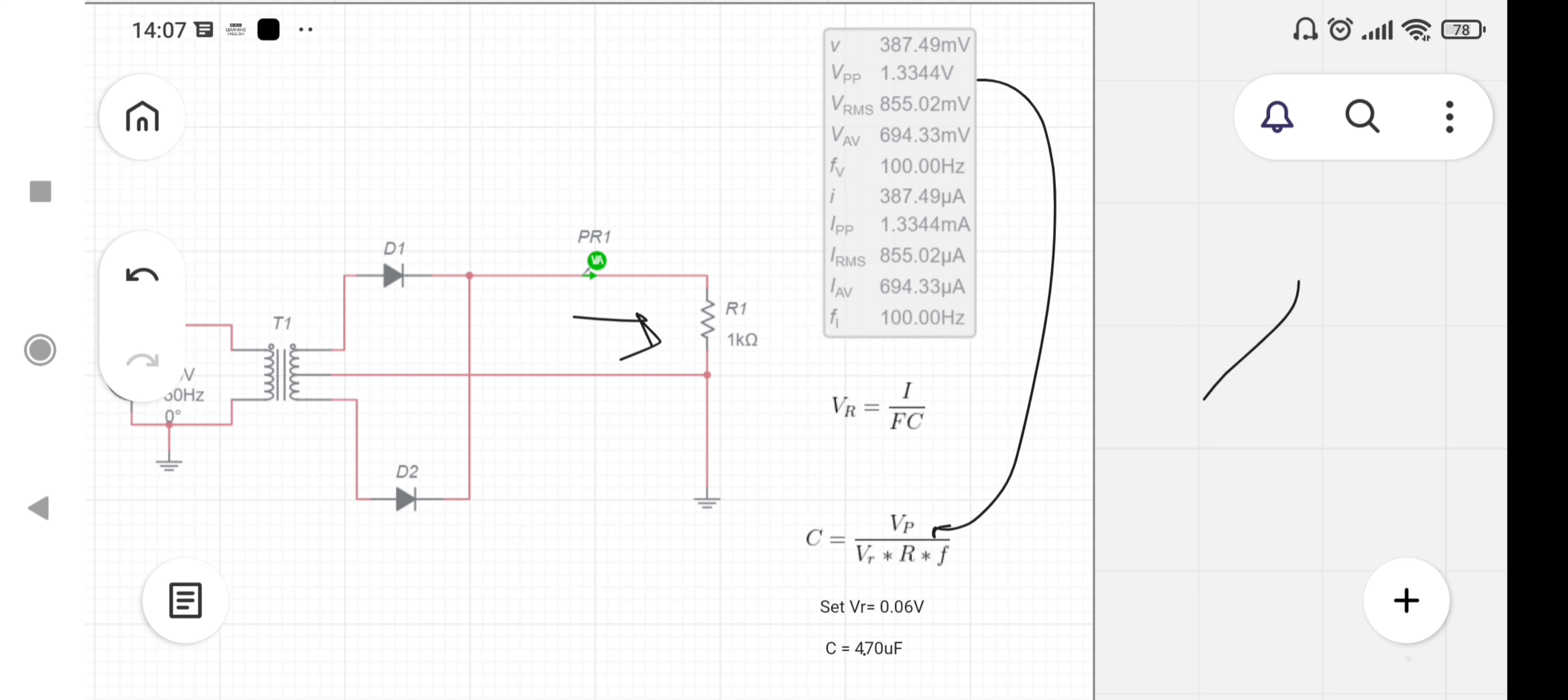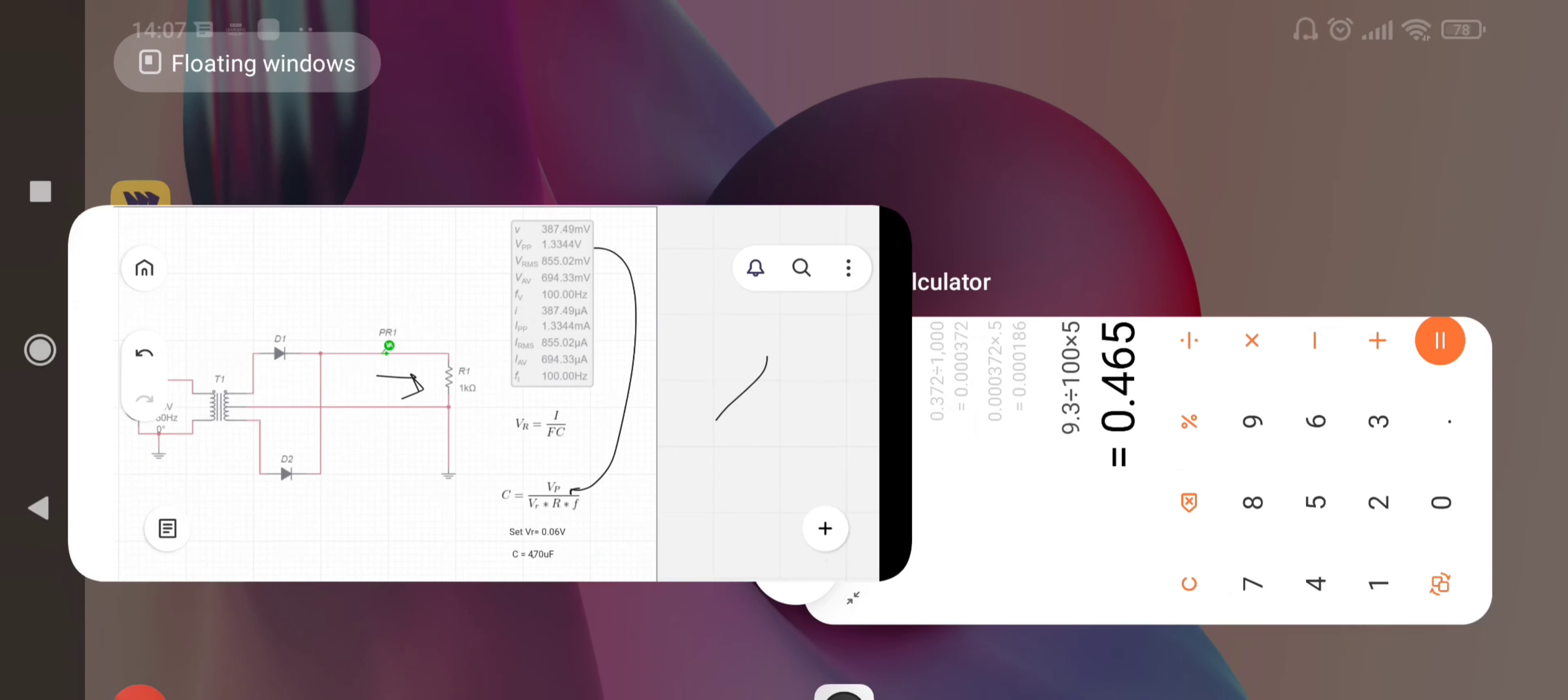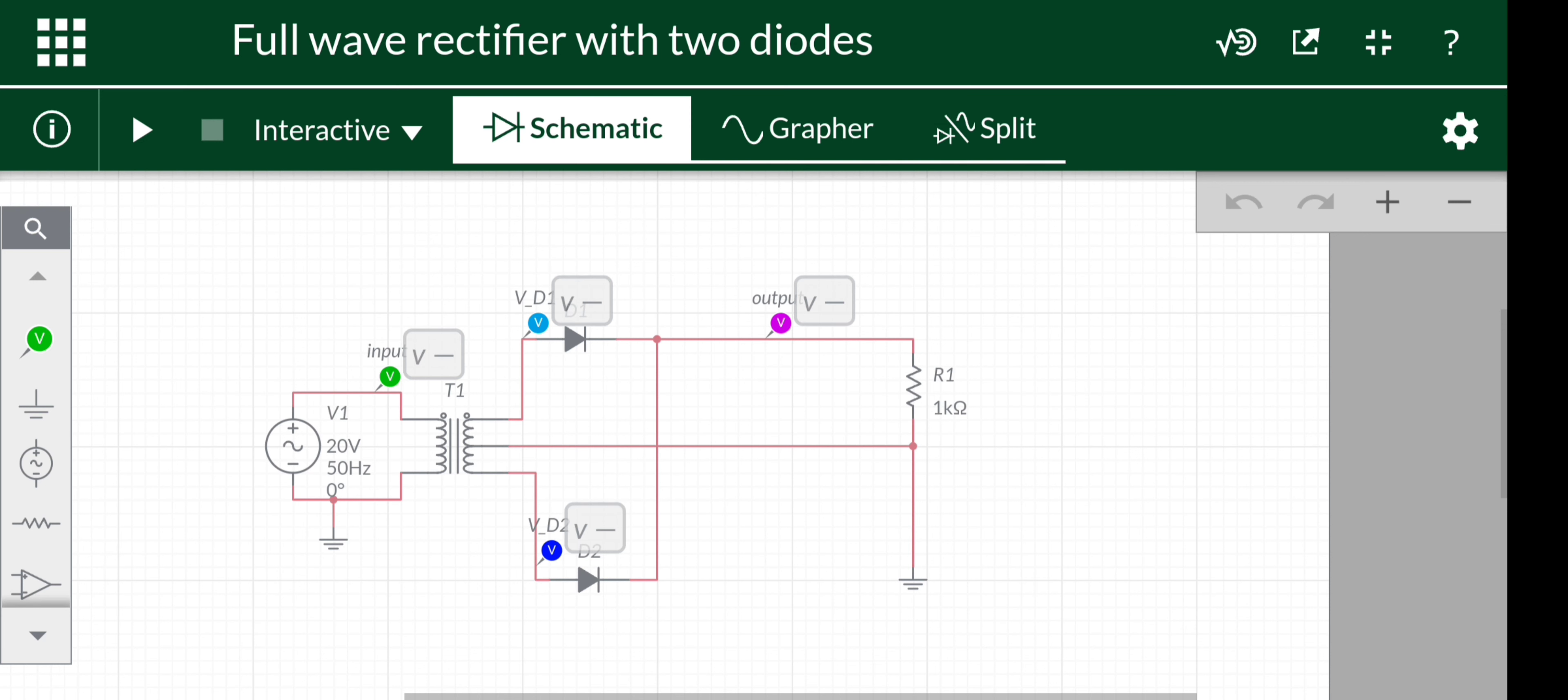With the help of these values, C is equal to 470 microfarad. Now let's simulate the circuit.